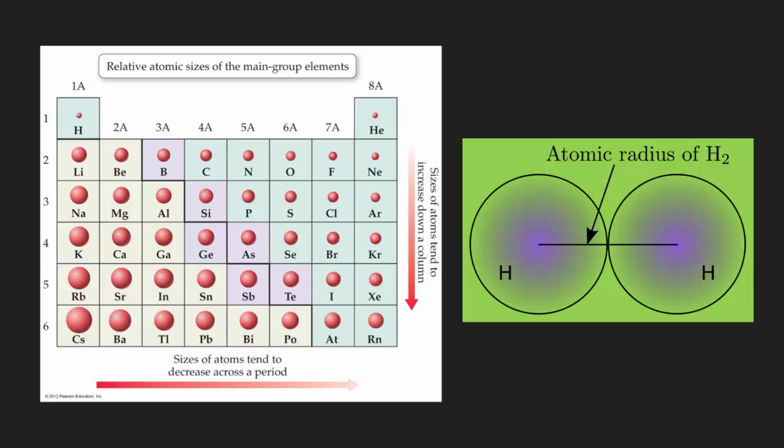So again, just looking at the main group elements, there's no transition metals. They all follow the same path. From left to right, they get smaller. From top to bottom, they will all get bigger.